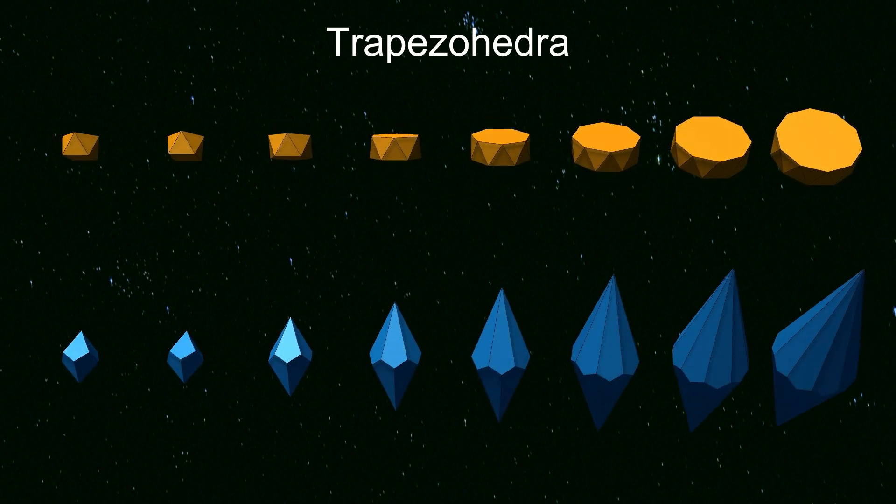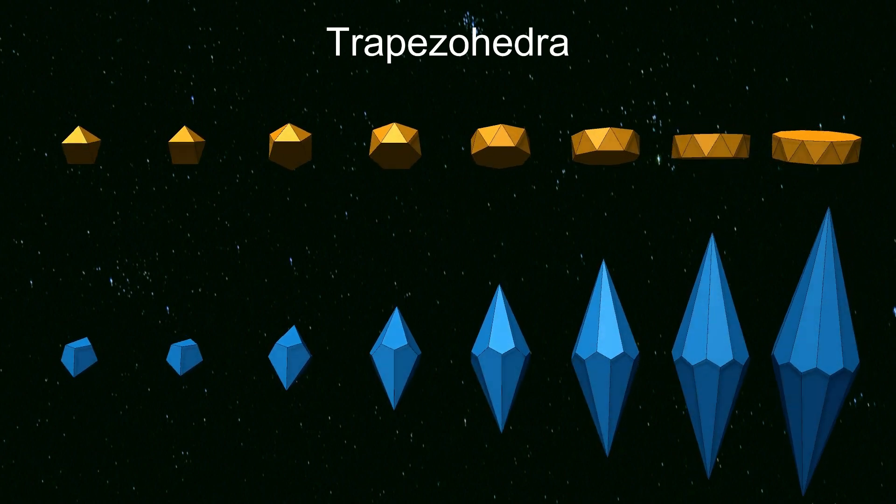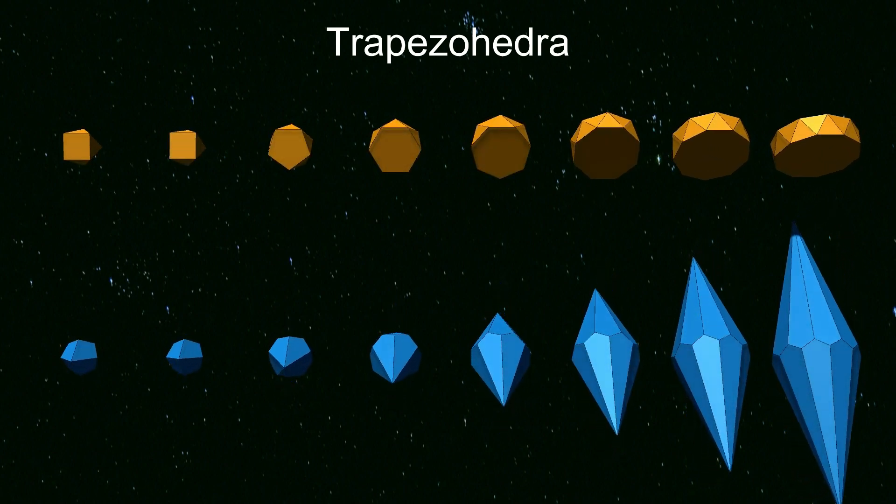The triangular trapezohedron is not shown here, because it is a cube, so it's not usually included in the family.